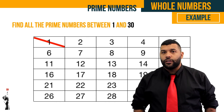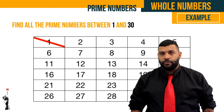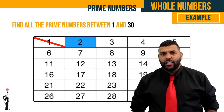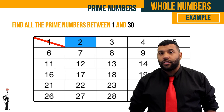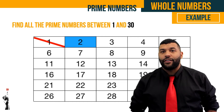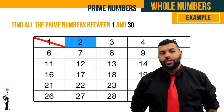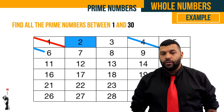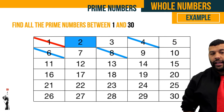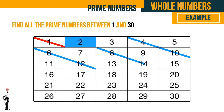Next we move on to the number two. We do not scratch out two, but we scratch out every multiple of two: four, six, eight, ten, twelve, fourteen, sixteen, eighteen, twenty, twenty-two, twenty-four, twenty-six, twenty-eight, and thirty.